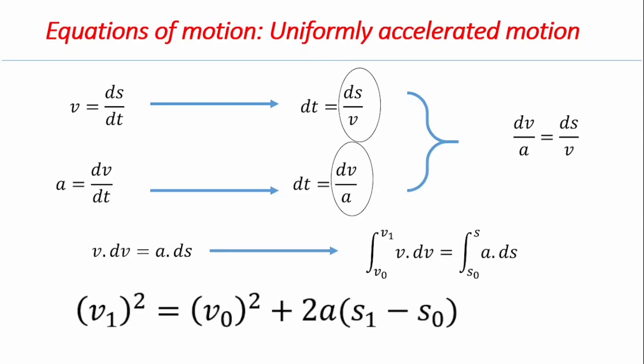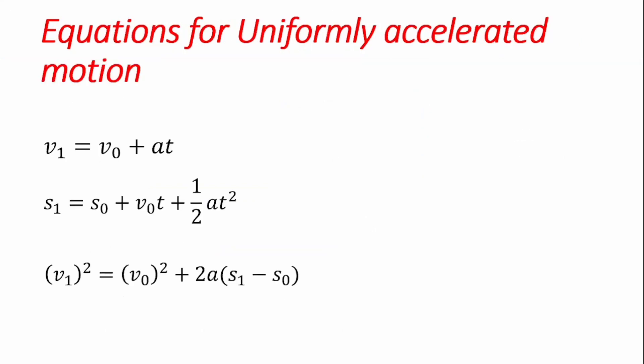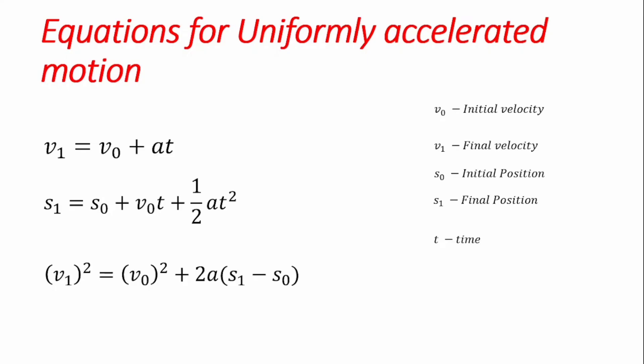So basically, there are three key equations applied for solving problems of uniformly accelerated motion, and all the terms are familiar: v0 is the initial velocity, v1 is the final velocity, x0 is the initial position, x is the final position, t is time, and a is the acceleration. Thank you for your time and for watching. Please subscribe to the channel and click the alert button to get notified when new videos are uploaded.